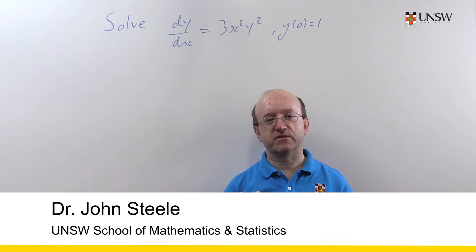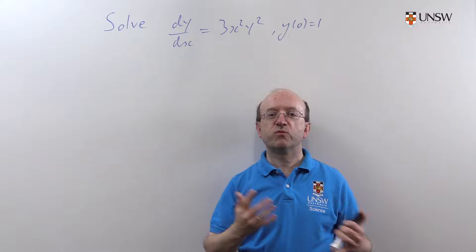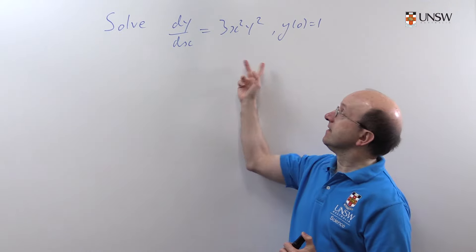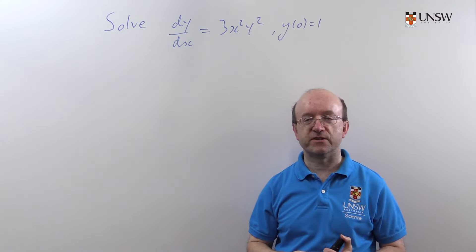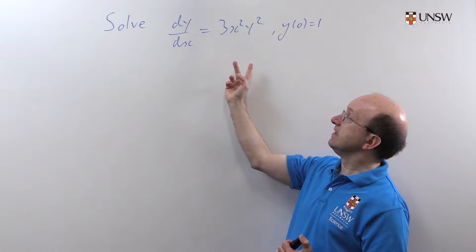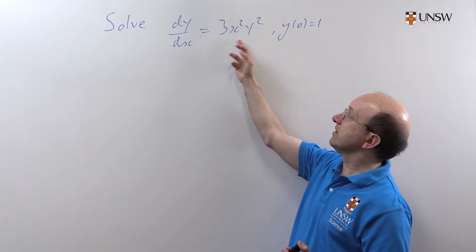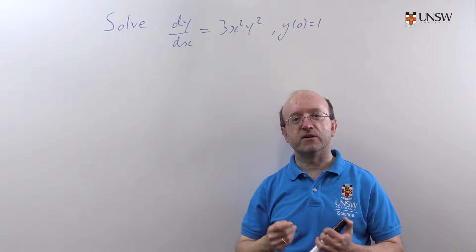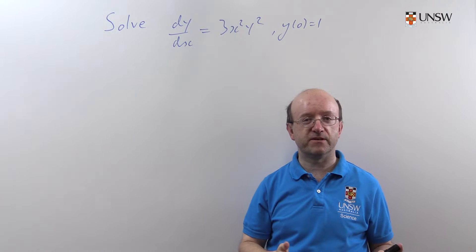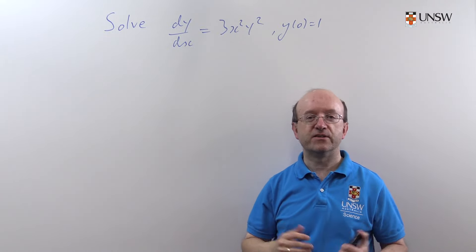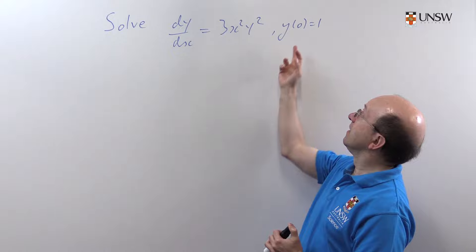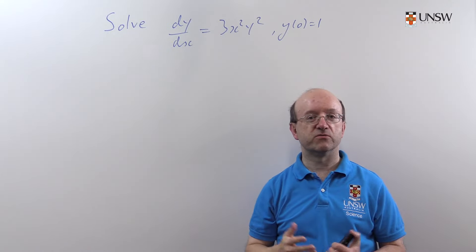In this video we're going to solve a simple initial value problem. That's a differential equation with an initial value, and in this case it's a separable differential equation. When we write it in this form, we've got the derivative on one side and on the other side we have a product of a function of the independent variable x and the dependent variable y. Our initial condition is that y(0) = 1.